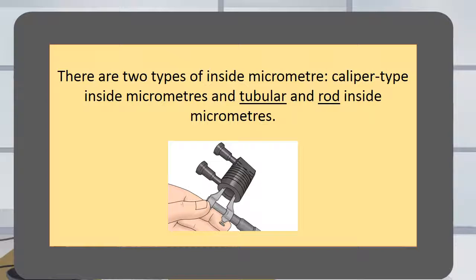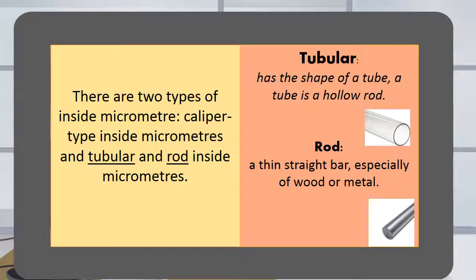Caliper type inside micrometers and tubular and rod inside micrometers. Tubular has the shape of a tube. A tube is a hollow rod.